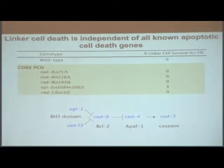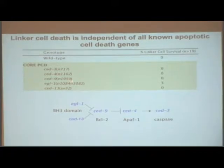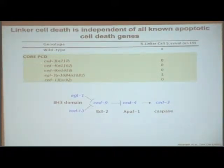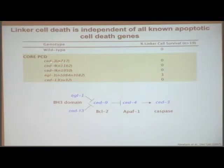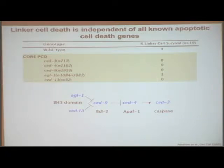We also know that the linker cell dies non-apoptotically. Here I'm showing you evidence that the known apoptotic pathway — for example the CED-3 protein — is not involved in linker cell death. When CED-3 is mutated and cannot function properly, the linker cell still dies normally. By having no linker cell survival, this means that the linker cell dies normally even without CED-3.